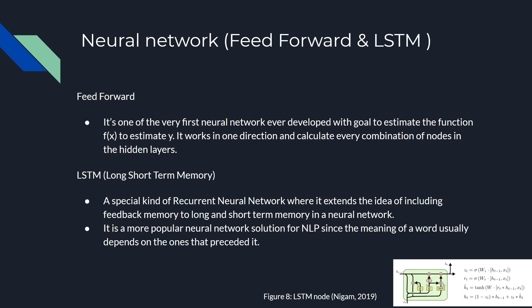For the neural network we're trying two different methods. One is a feedforward neural network, which is the simplest neural network model, to be compared to our next model, long short-term memory. LSTM is a special kind of recurrent neural network that uses memory as a feature. In natural language processing, words usually have contextual meaning behind them, and LSTM captures the one-directional context of those words.